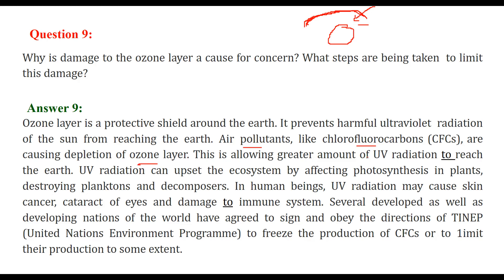Ozone depletion is allowing a greater amount of ultraviolet radiation to reach earth, which can upset the ecosystem by affecting photosynthesis in plants. If large amounts of ultraviolet rays are exposed to trees, plants, planktons, and decomposers, they will be adversely affected and die. In human beings, ultraviolet radiation may cause skin cancer — this has been seen in New Zealand and Australia where there is an ozone hole. Cataract and damage to the immune system are also adverse effects.